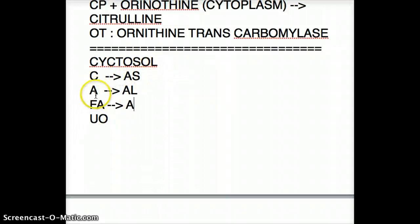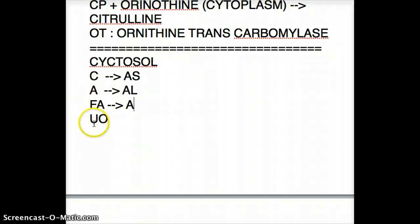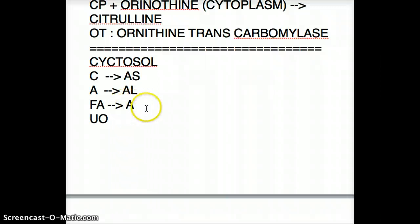Argininosuccinate becomes fumarate and arginine, achieved by the enzyme argininosuccinate lyase. Then arginine alone becomes urea and ornithine, achieved by arginase. So the full mnemonic is C-A-F-A-U-O with enzymes A-S, A-L, A.